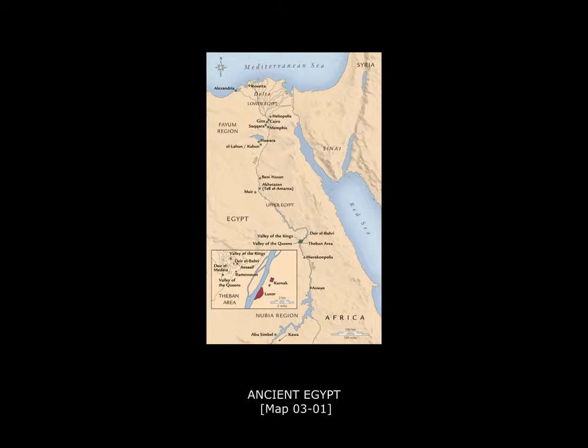Upper Egypt is actually in the south because it's in the highlands, and Lower Egypt is in the north at the Nile Delta. We call Upper Egypt 'Upper' because it's in a more elevated territory and Lower Egypt 'Lower' because it's in a lower territory. The Nile is interesting because it flows from north to south — I think it's the only river in the world known to do so — flowing down from the mountains in southern Africa down to the Nile Delta Valley into the Mediterranean Sea.